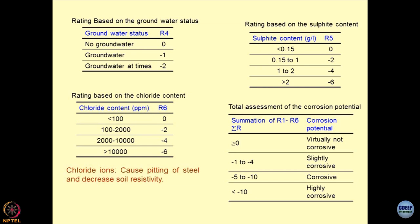Extremely high values of sulphide content are not good. Extremely high chloride contents are also not good — in coastal areas, chloride concentrations can be approximately 4,000 to 12,000 depending on the area. Ultimately, we sum up all parameters R1 to R6 and define recommendations: if R is positive, it is a very good situation; if R is extremely negative, it is a highly corrosive system. Industries are using this classification scheme and are quite happy with it.